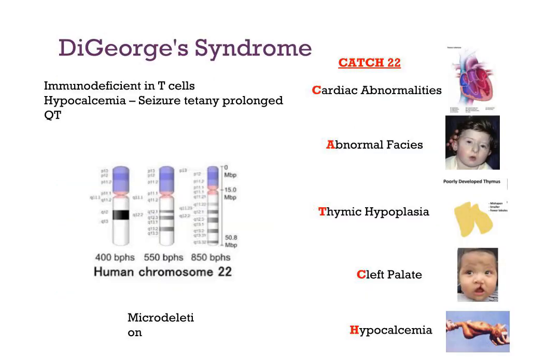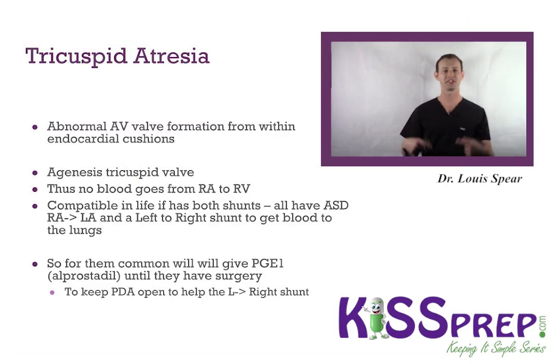Truncus Arteriosus is seen in DiGeorge syndrome — remember CATCH-22: Cardiac abnormalities (Truncus Arteriosus), Abnormal facies, Thymic aplasia (absent thymus, low T-cells), Cleft palate, Hypocalcemia, chromosome 22. With low T-cells you have an immunocompromised state, and low calcium from low parathyroid can lead to tetany or seizures. The key cardiac abnormality tie-in here is Truncus Arteriosus.